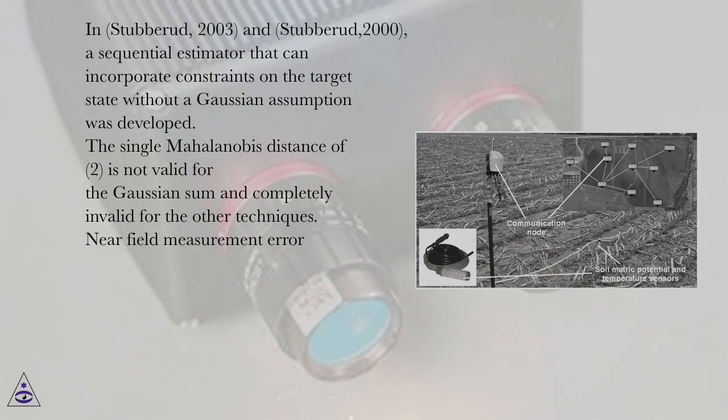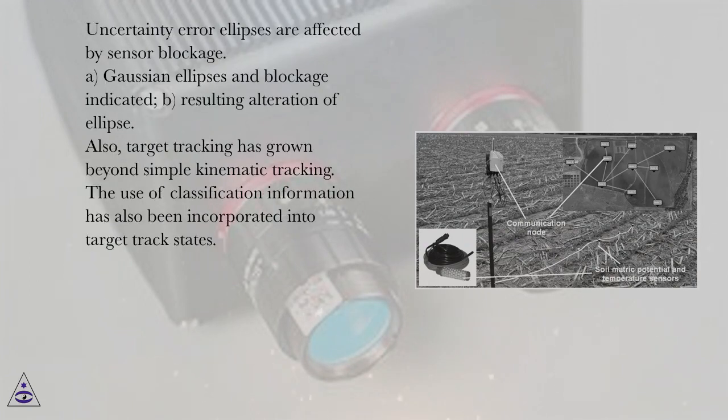Near field measurement error: uncertainty error ellipses are affected by sensor blockage. A. Gaussian ellipses and blockage indicated. B. Resulting alteration of ellipse.